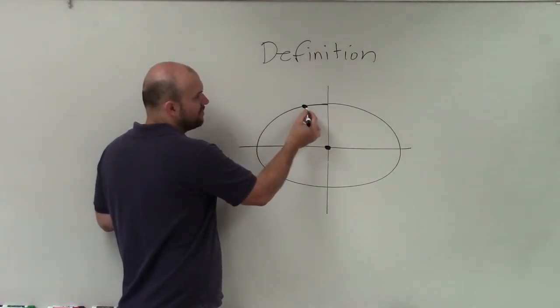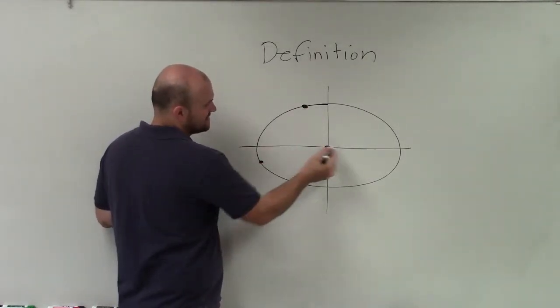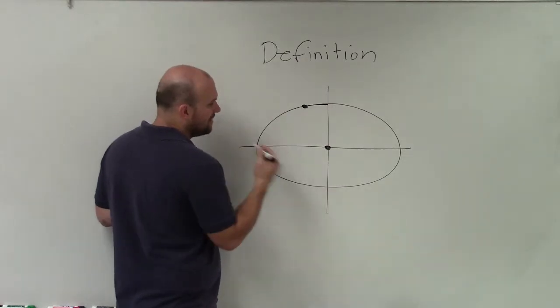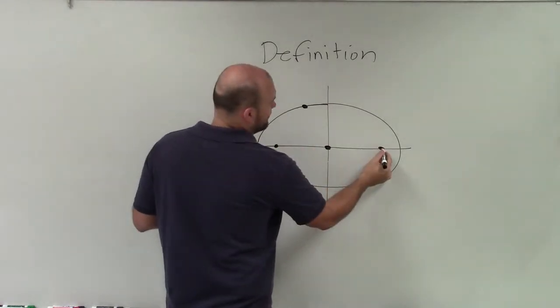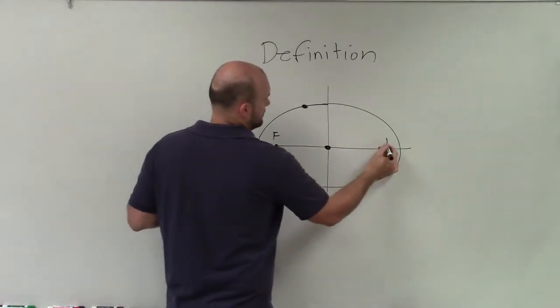Obviously we know that each and every point is not equidistant to the center, right? However, there are two points which we call our foci.